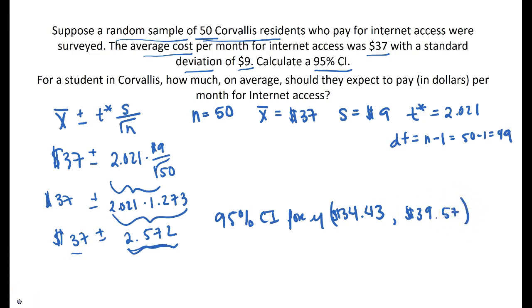This means that the average that a student in Corvallis should expect to pay for internet access per month is around $34.43 and $39.57. Hopefully this video helped you understand how to calculate a confidence interval using a T procedure for a mean.